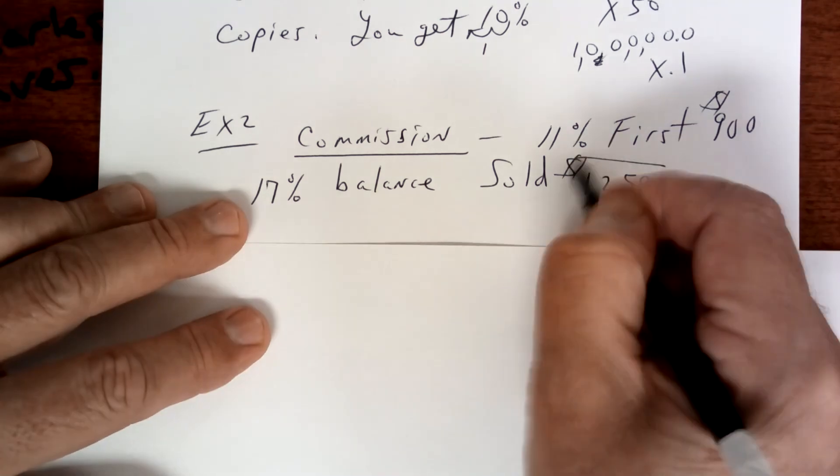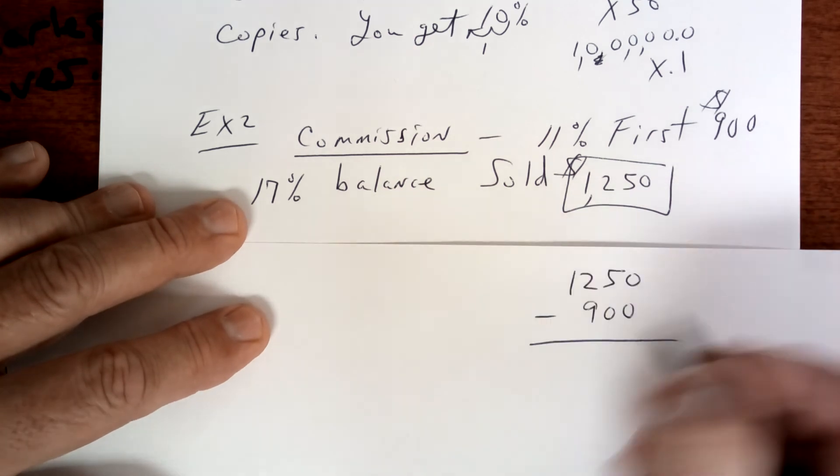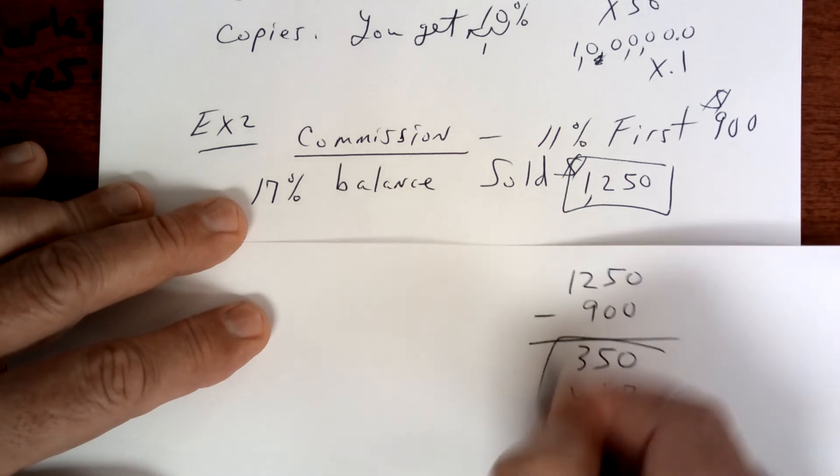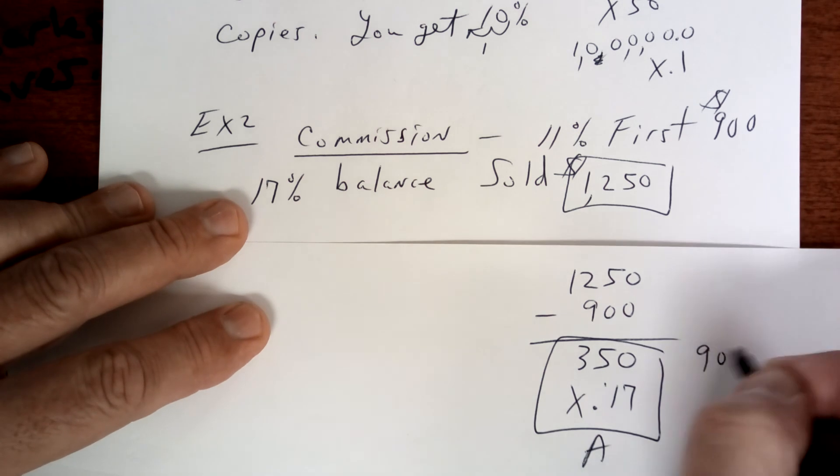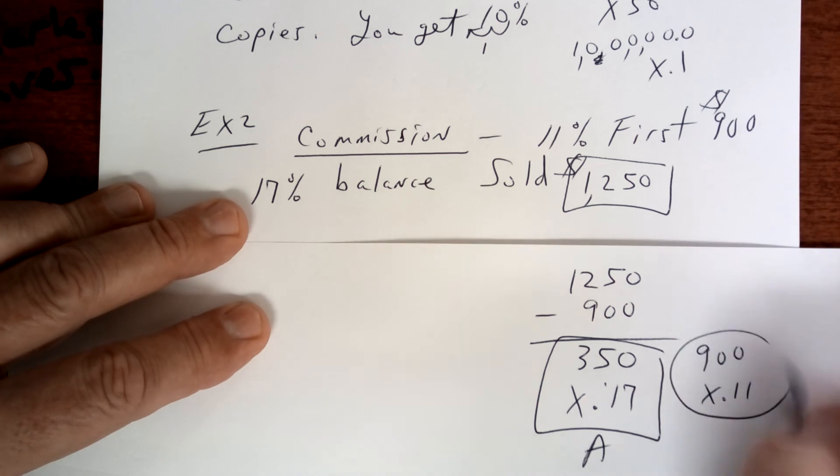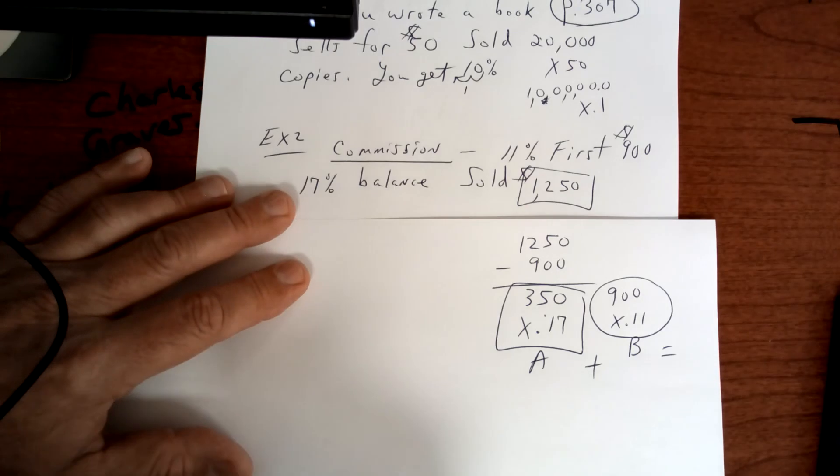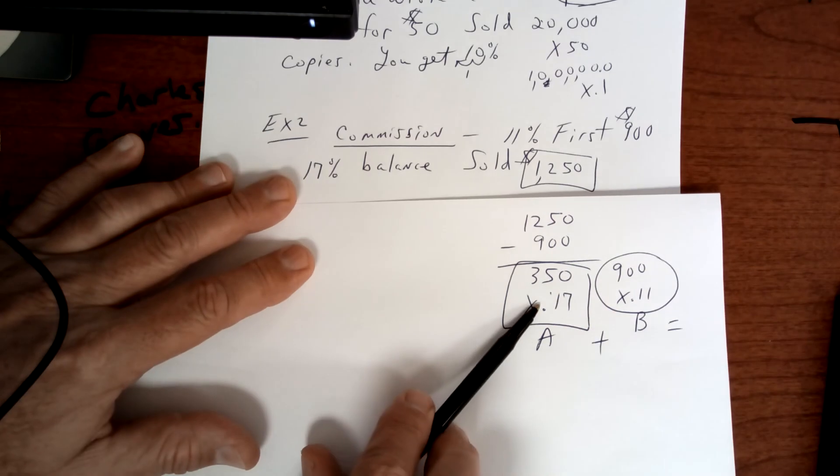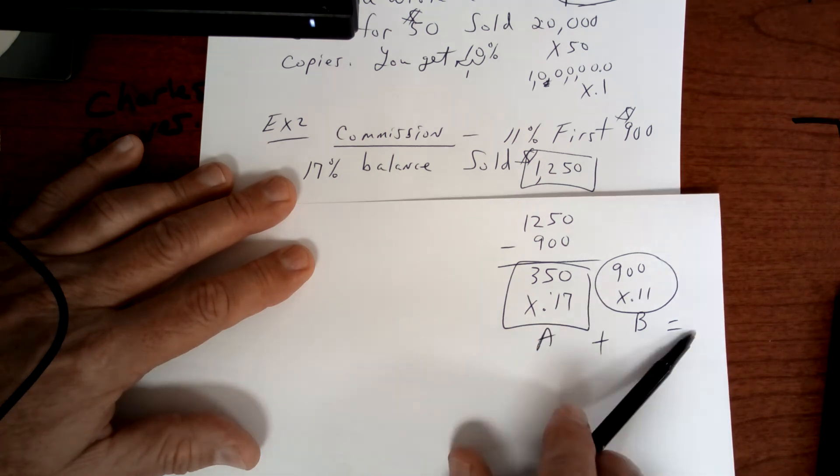So you sold this amount. You're going to take 1250 minus 900. That's going to be 350. So you're going to take $350 at 17%. That's your first one, we'll call that A. Your second one is going to be 900 times 0.11. That one is going to be B. And you're going to add those up and you get your answer. Multiply the excess to the bigger percentage. Multiply the base amount and then add them up and you got your answer.